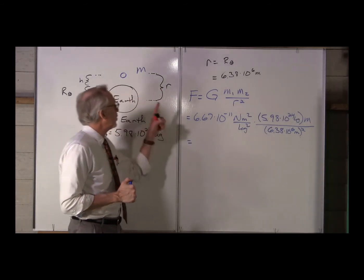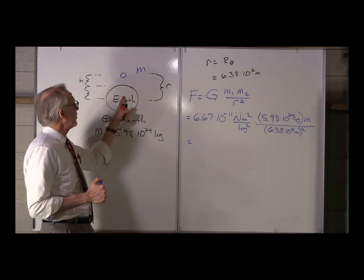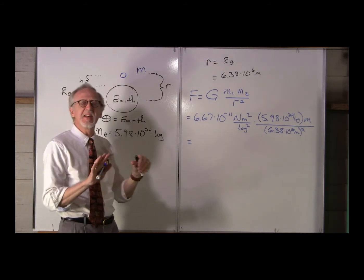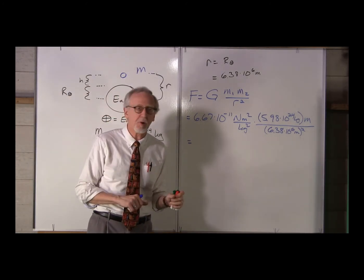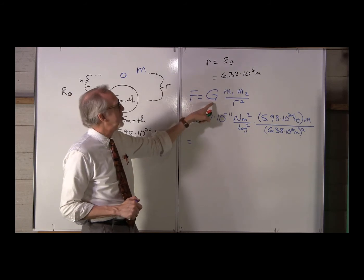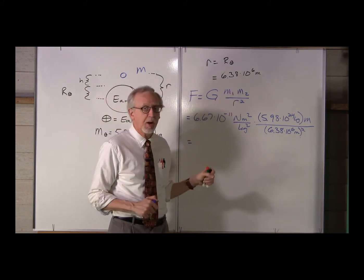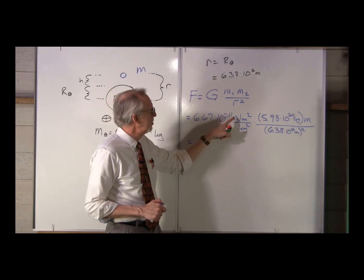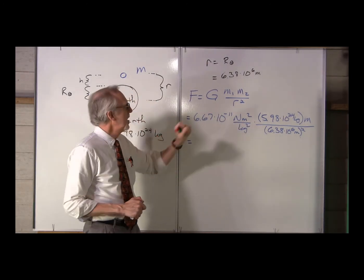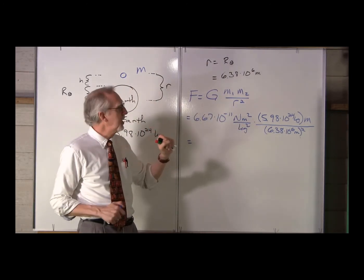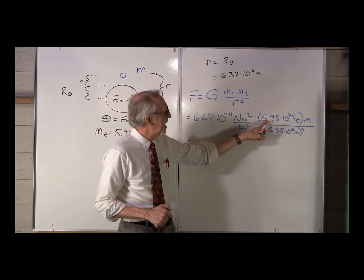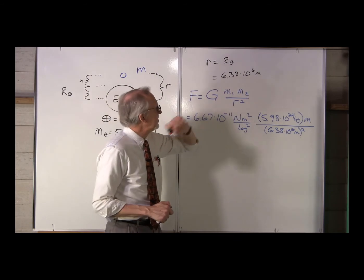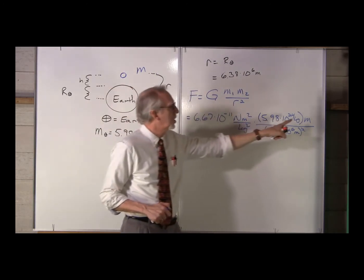The force of attraction between the Earth and our object M — we're just going to assume it has some arbitrary mass M — will then be G M1 M2 over R squared, where G is 6.67 times 10 to the minus 11 newton meter squared per kilogram squared, times M1, the mass of the Earth, which is 5.98 times 10 to the twenty-fourth kilograms, times the mass of the second object, which we're just going to call M.